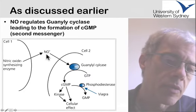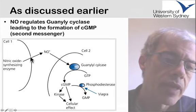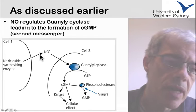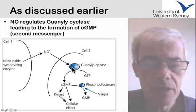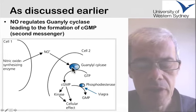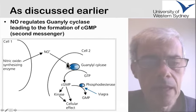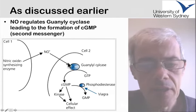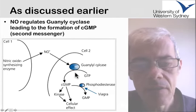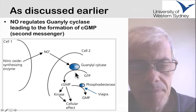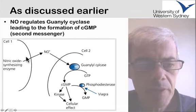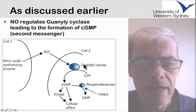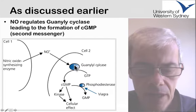Nitric oxide is able to pass through membranes, so nitric oxide can leave the cell where it was made and diffuse into another cell within its short half-life. Nitric oxide has the ability to activate guanylyl cyclase, and here we have nitric oxide traversing into another cell to activate guanylyl cyclase.